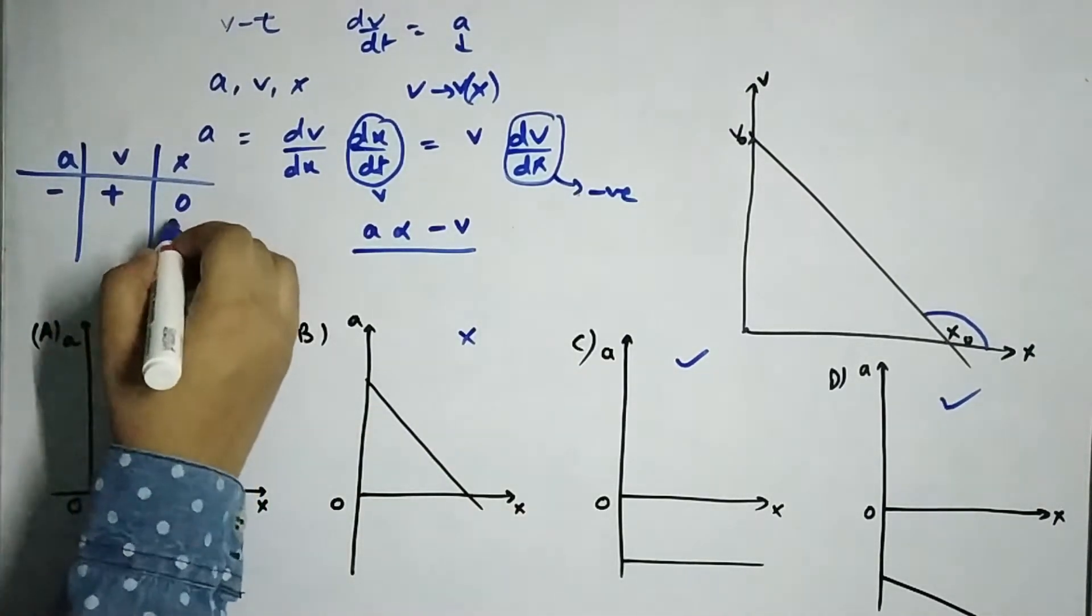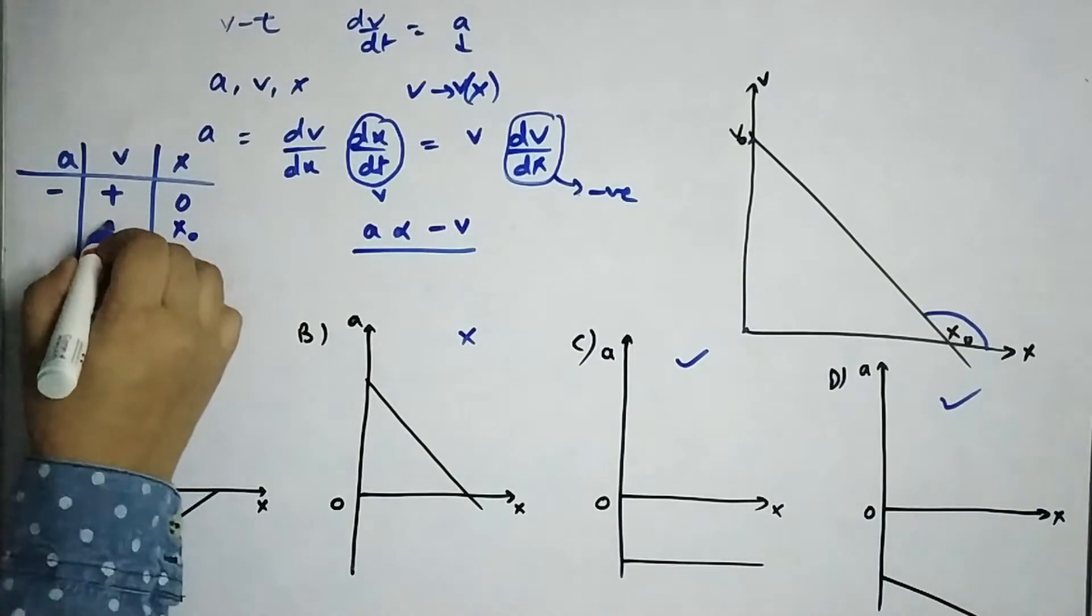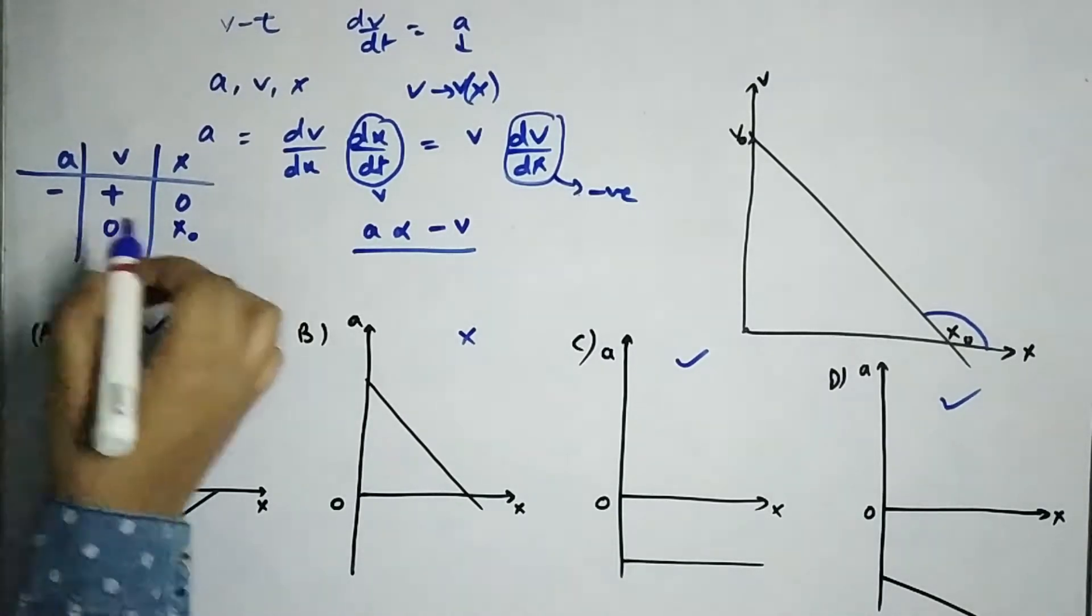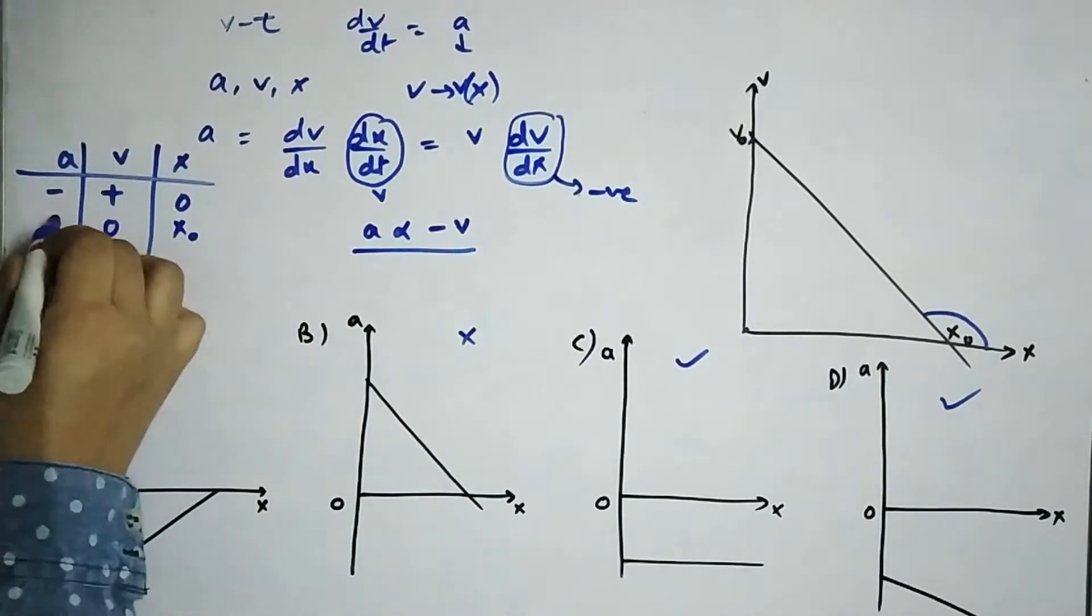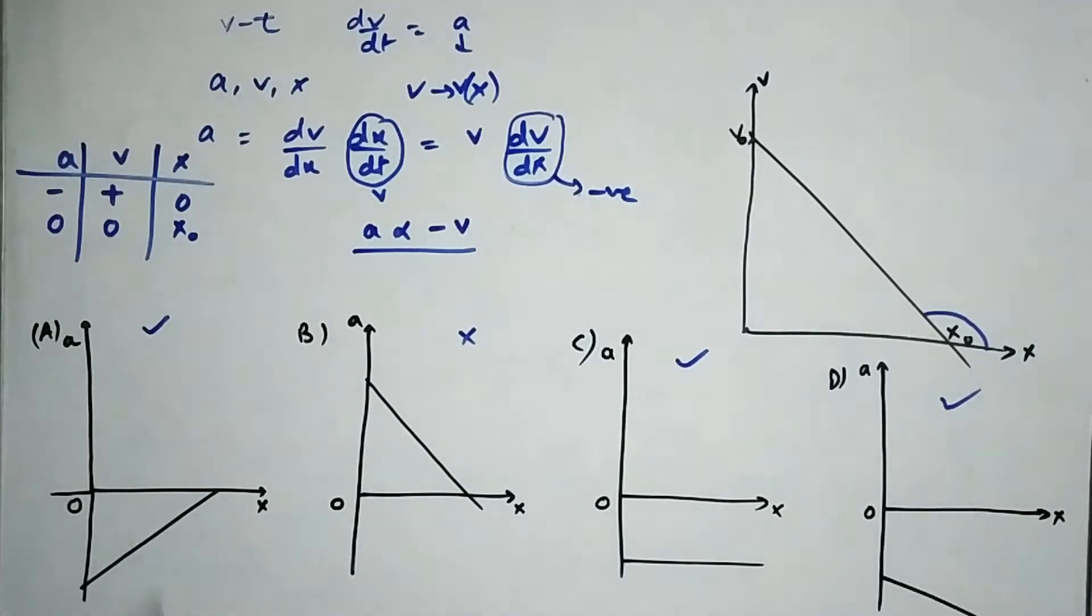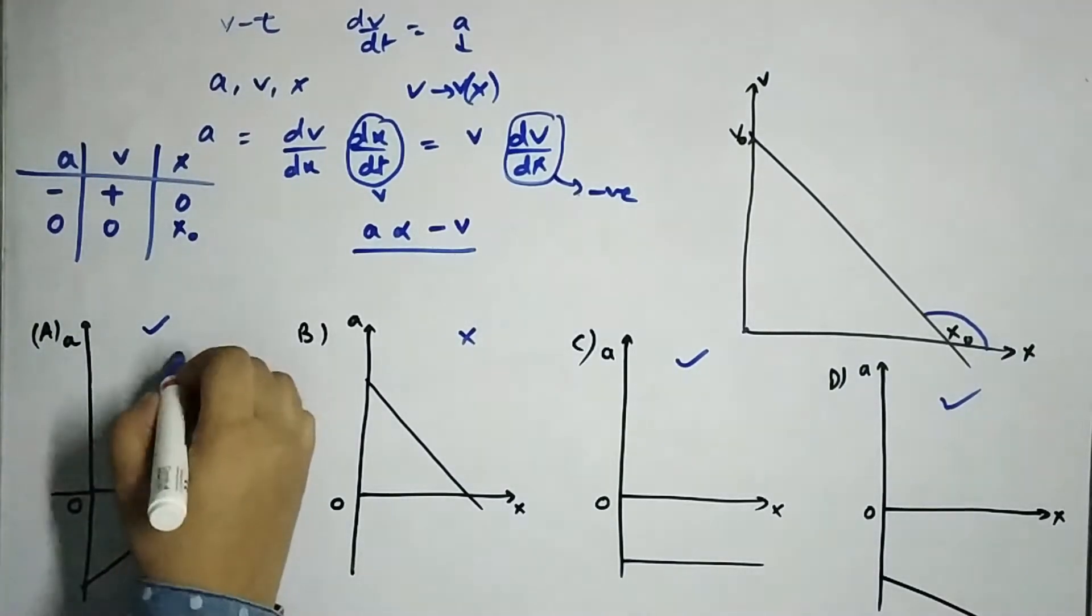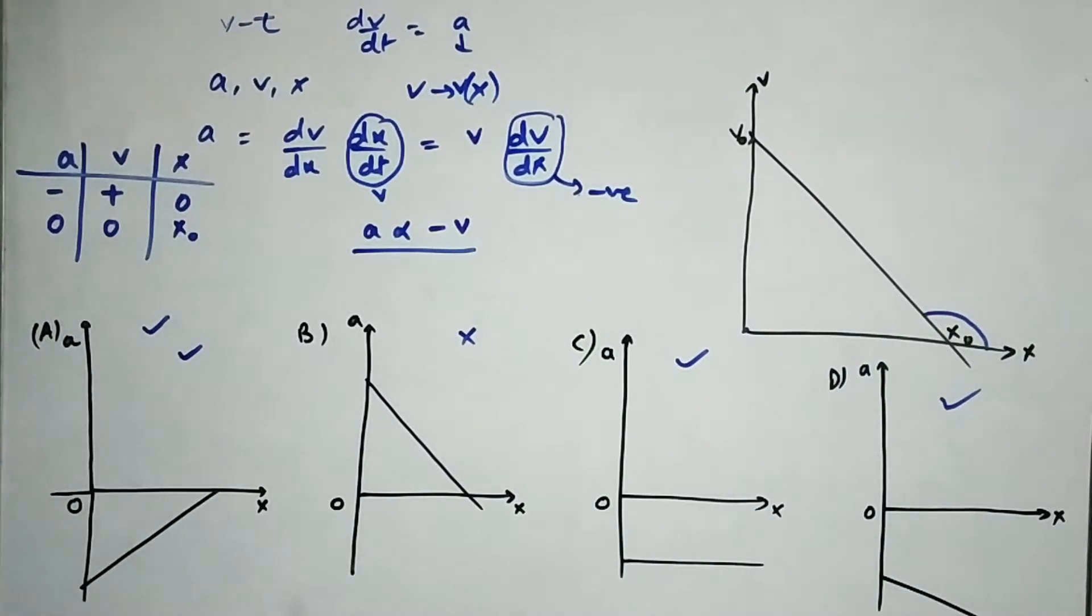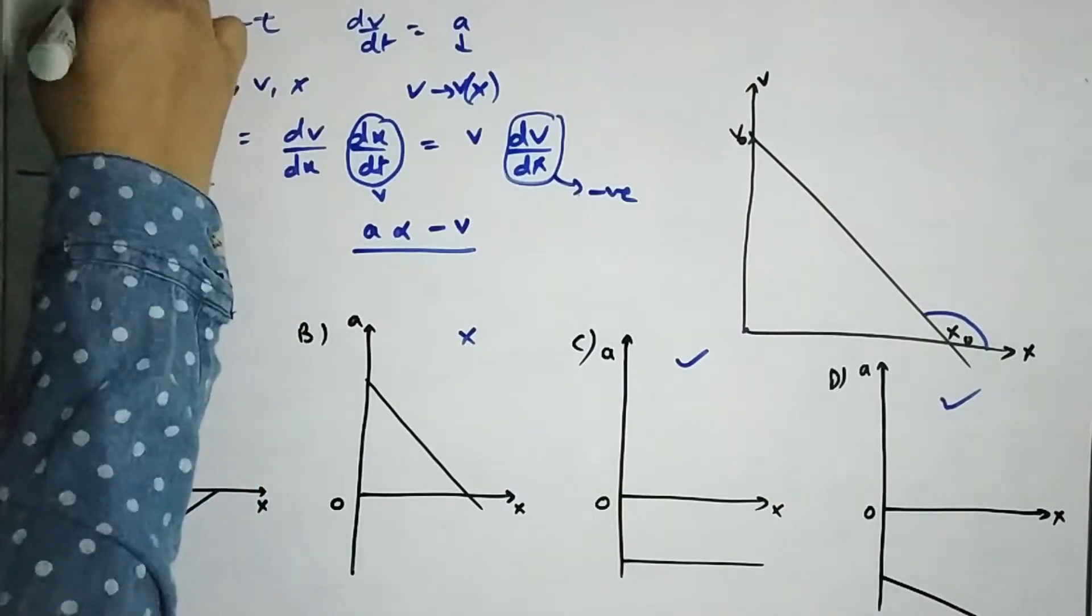Now, at x equals x0, our velocity is zero. So apparently acceleration will be zero as well, which will be satisfied only in this one. So we have the answer. We have the answer a.